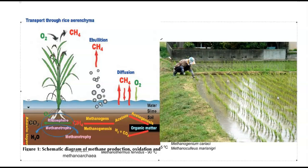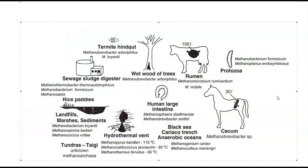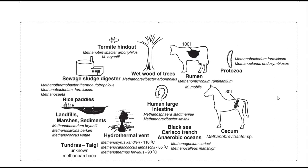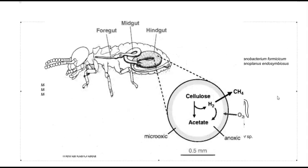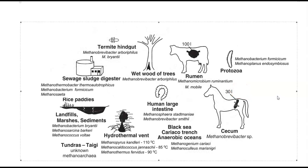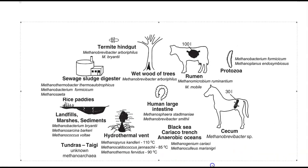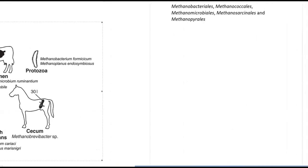Further environments where methanogens are found include sewage sludge digester systems and termite gut regions, particularly the hindgut. Names of the methanogens have been given below each example of environment discussed. In a broader scale, the types of methanogens present in the environment belong to the group of archaea and fall into the following orders.